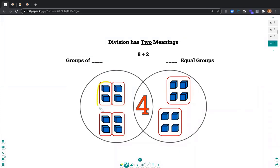I can make groups of 2. There is 1 group of 2, 2 groups of 2, 3 groups of 2, and 4 groups of 2. If I start with 8 and there is my quotient of 4. 8 divided by 2 is 4 if I am making groups of 2.